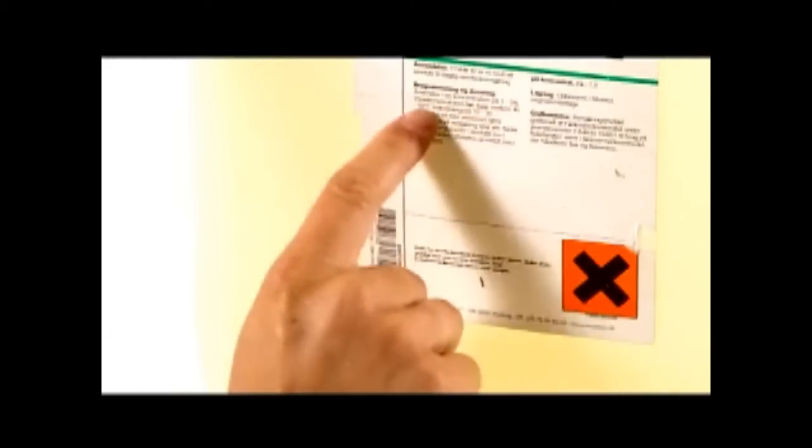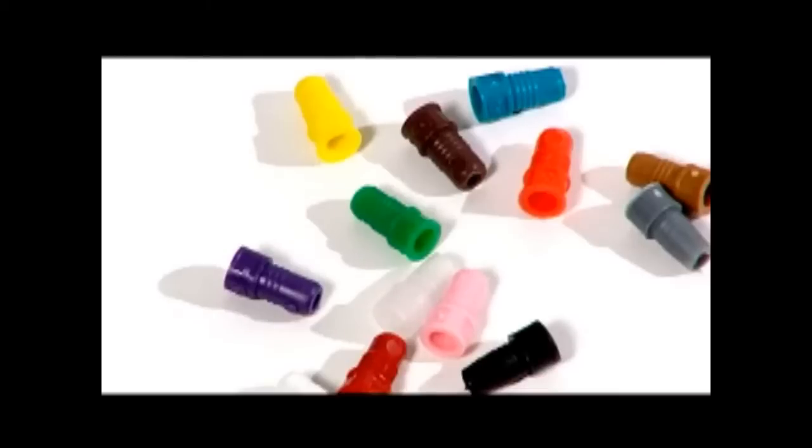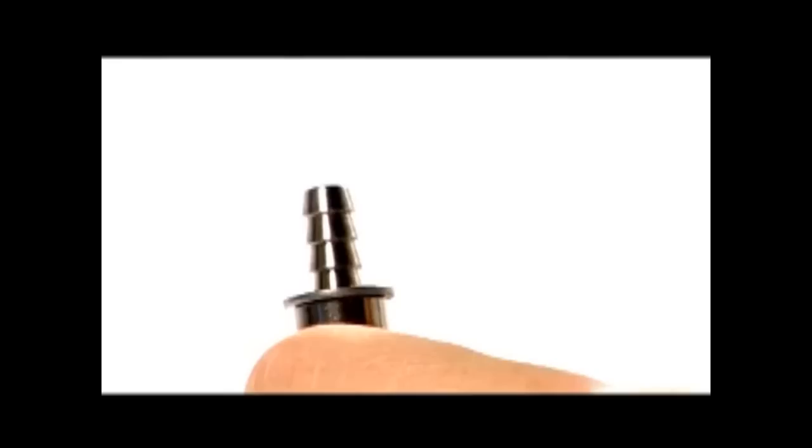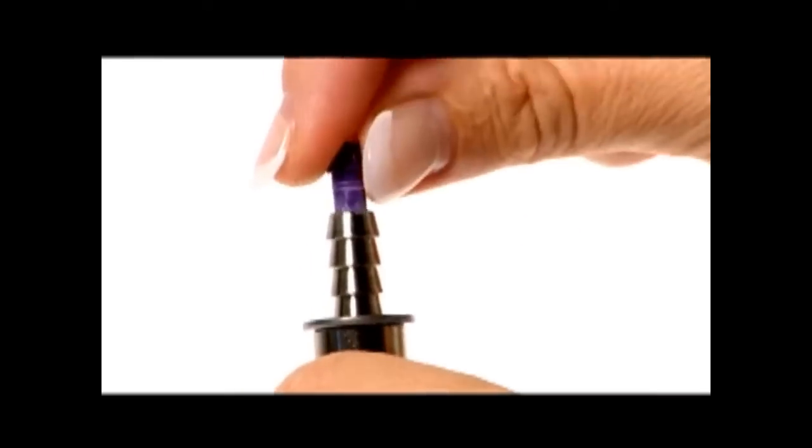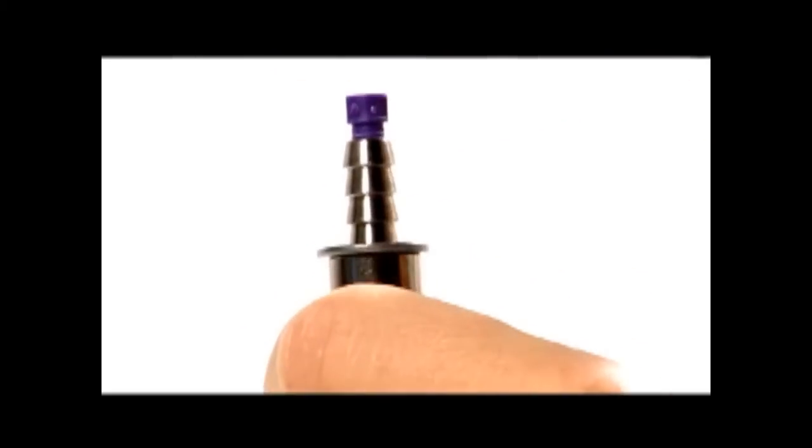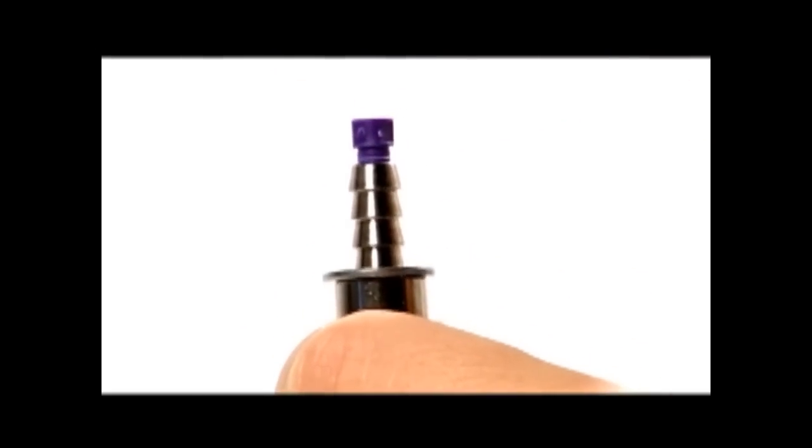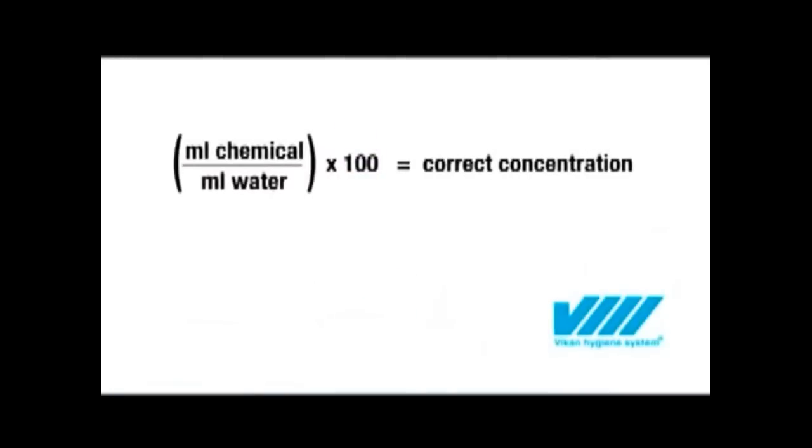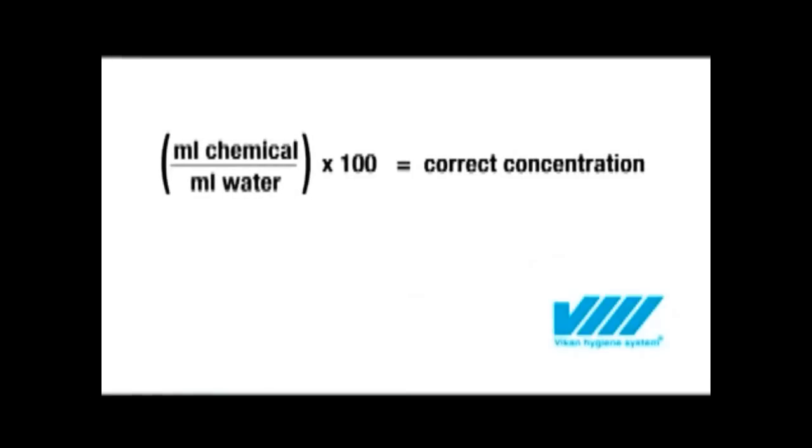Check the level of chemical concentration to be used. Choose the colour of dosage nozzle that matches the correct concentration. If the chemical container instead shows a chemical to water mixing ratio, you can use this formula to determine the nozzle colour. Chemical millimetres divided by water millimetres times 100 equals the correct concentration.